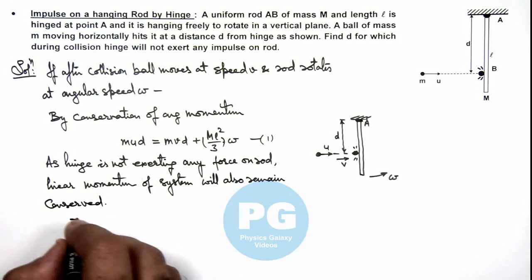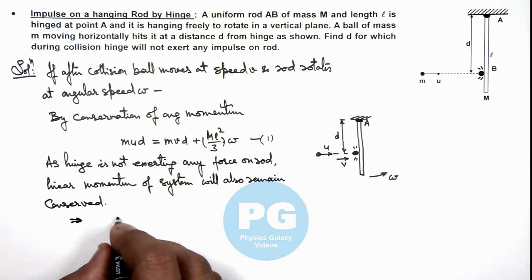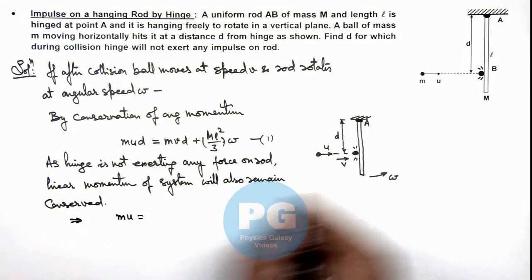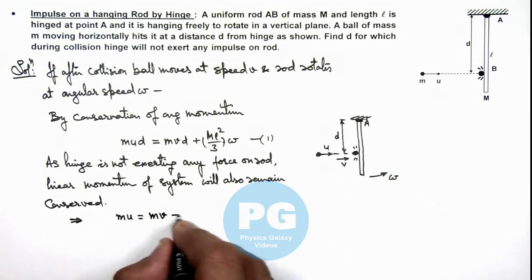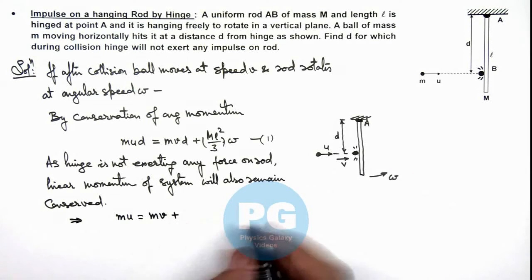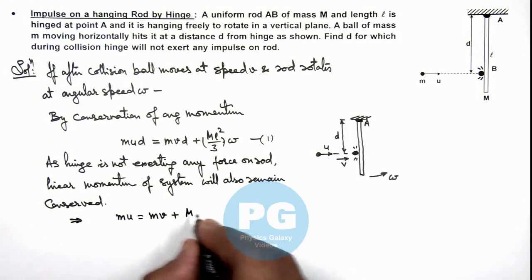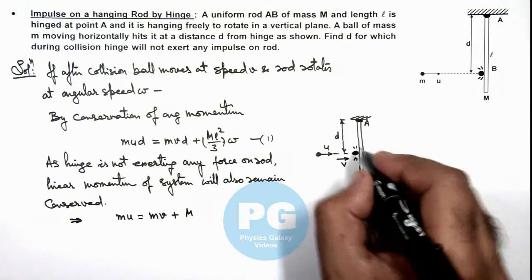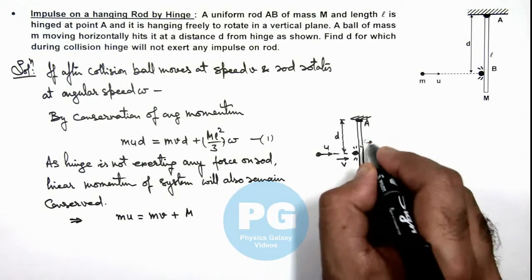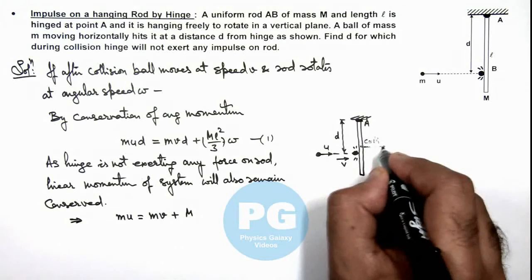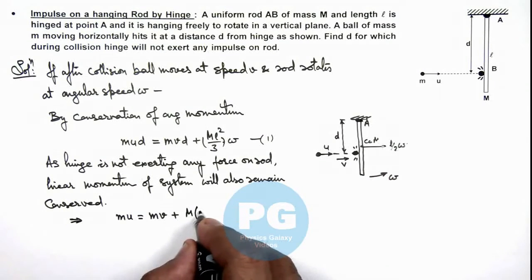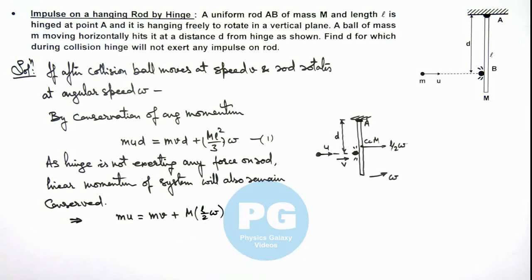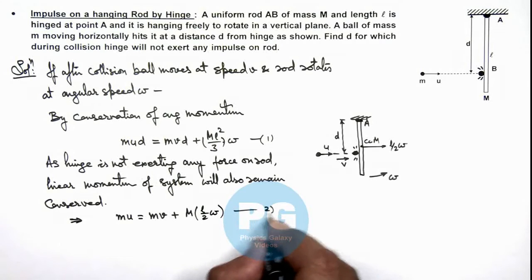This implies here we can write the linear momentum of ball, ball was m u, and after collision, the linear momentum of ball is m v plus that of rod we can write as m, and if it is moving at angular speed omega, its center of mass can be considered to be moving at speed l by 2 omega. So its linear momentum will be m multiplied by velocity of center of mass which is l by 2 omega. This will be our equation 2.